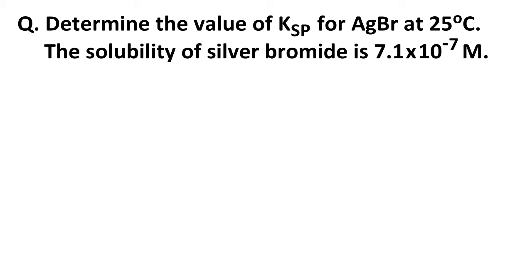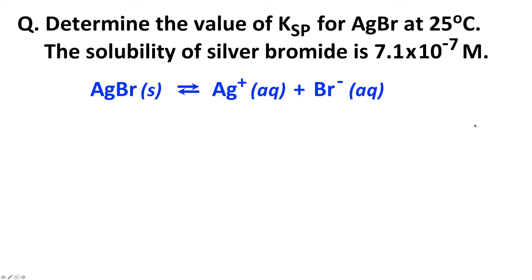How do we do calculations with Ksp? For the first problem: determine the Ksp for silver bromide at 25°C, given that its solubility is 7.1 × 10⁻⁷ M. We write the equilibrium as AgBr(s) ⇌ Ag⁺ + Br⁻. Using an ICE table, the solid is on the left, and we assume initially none of the silver bromide has dissolved, so the initial concentrations of the ions are zero.